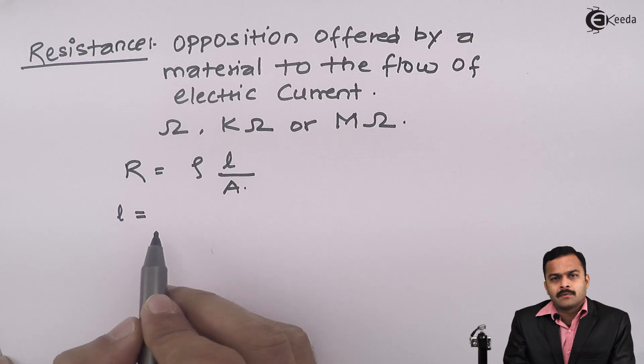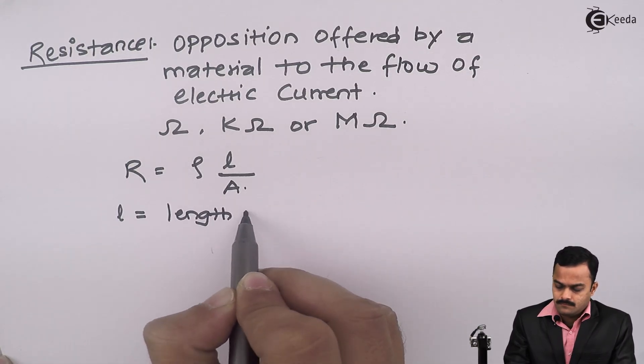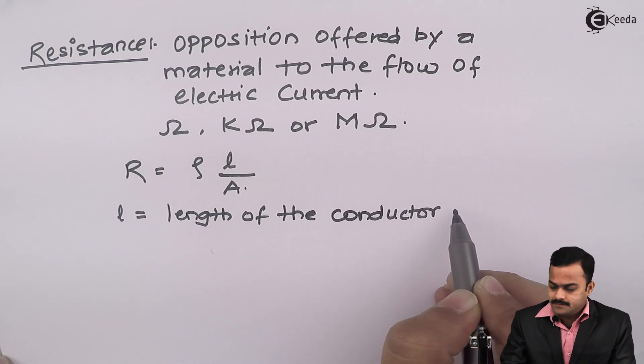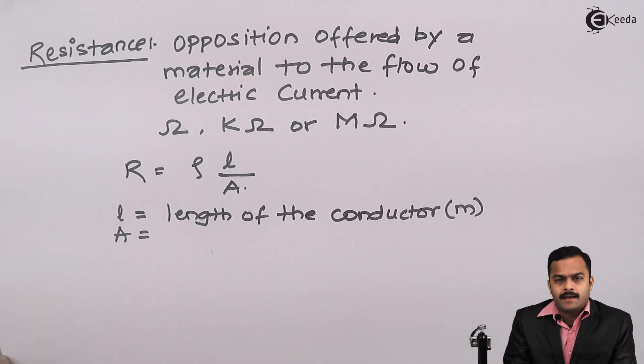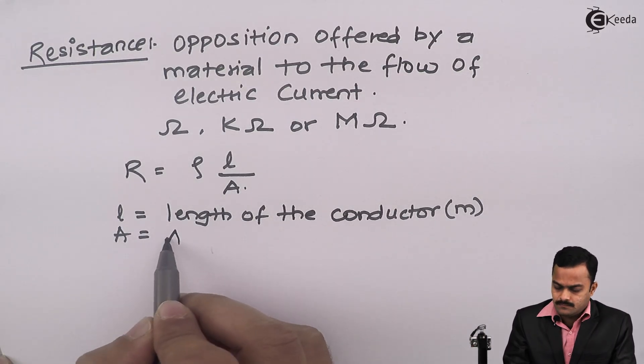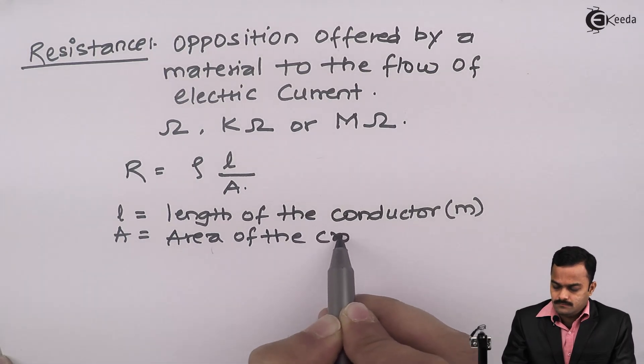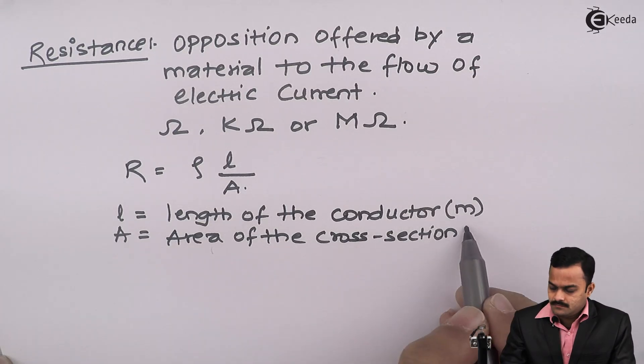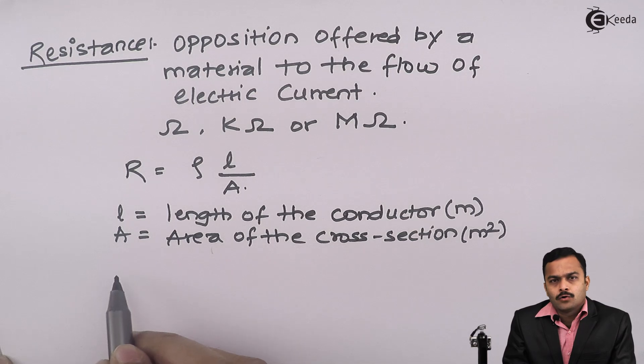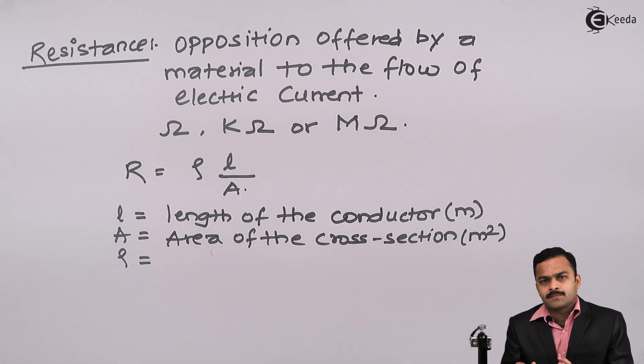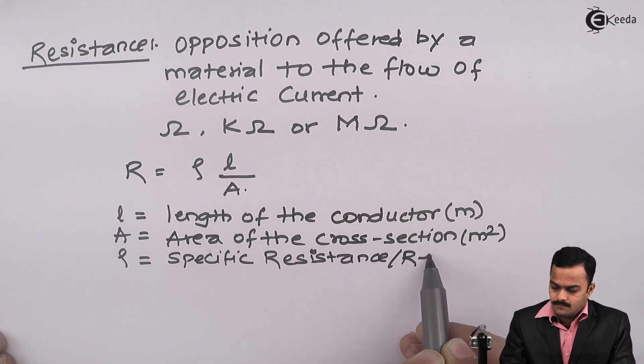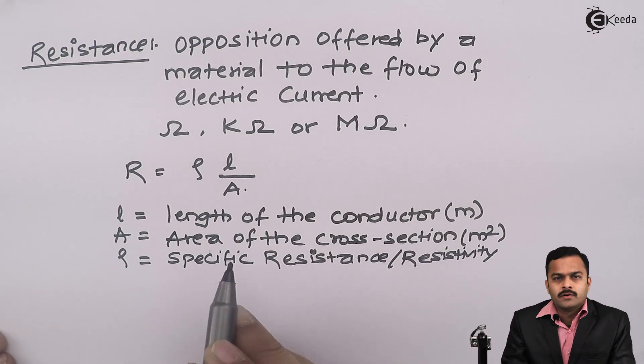Where L is the length of the conductor whose unit is meter. A is the area of cross section of the conductor, with unit meter square. And Rho is the material-specific resistivity, whose unit is ohm meter.